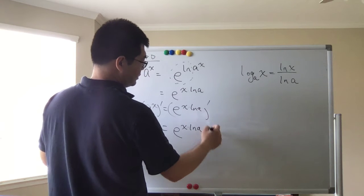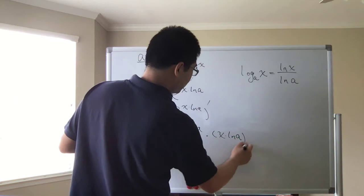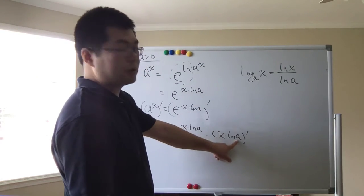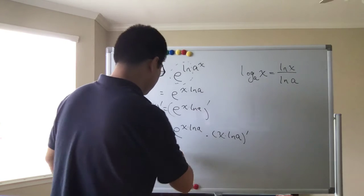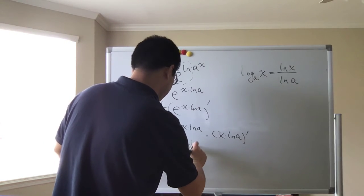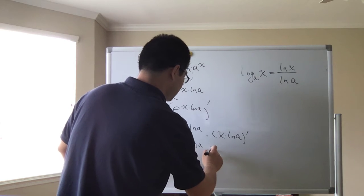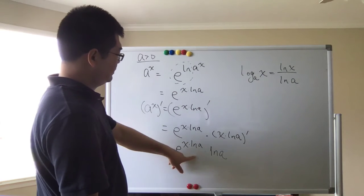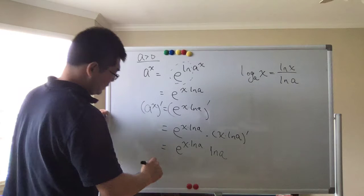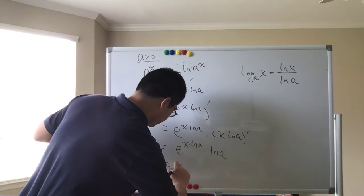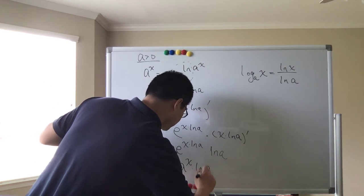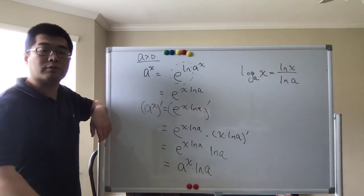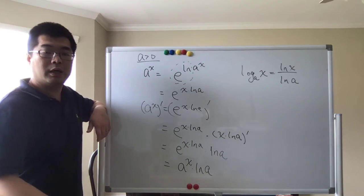The derivative of e to the power of (x · ln(a)) gives us e to the power of (x · ln(a)) times the derivative of the inside function. Since ln(a) is a constant times x, that derivative is just ln(a). We can replace e to the (x · ln(a)) back with a to the x, so the derivative of a to the power of x equals a to the power of x times ln(a).